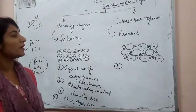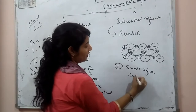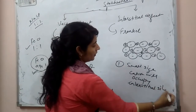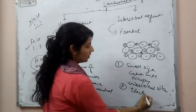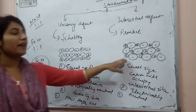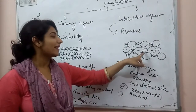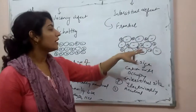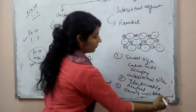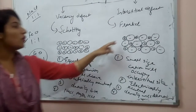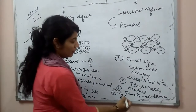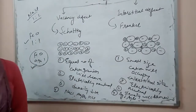In the case of Frenkel defect, the small-sized cation will occupy the interstitial site. It will be electrically neutral because the number of cations and anions remains equal. Density will remain the same — there will be no change in density — because the cation is not leaving the crystal; it is still inside the crystal. For the example, only compounds with small-sized cations like AgI and AgBr can show this defect.